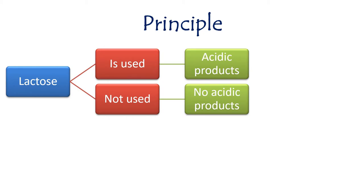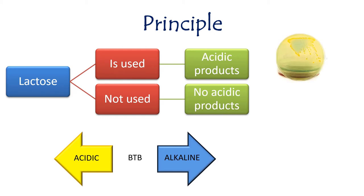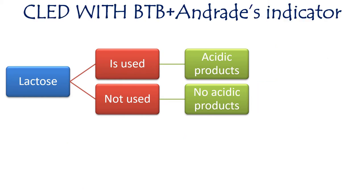Organisms that utilize or ferment lactose will break down lactose to give acidic products, whereas lactose non-fermenting organisms will not form acidic products. The pH indicator used in this medium is bromothymol blue, which is blue under alkaline conditions and yellow under acidic conditions. Thus, lactose fermenters giving acidic products will produce yellow colored colonies, whereas lactose non-fermenters will give blue colored colonies.